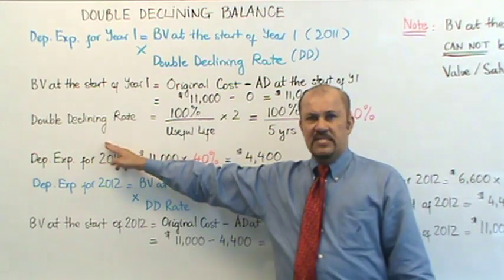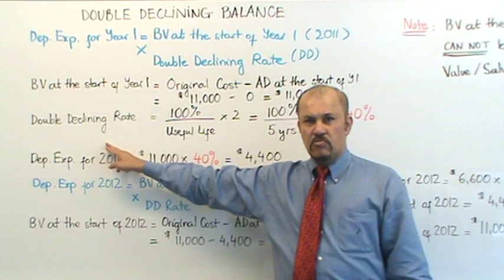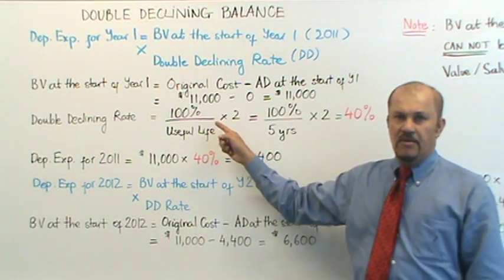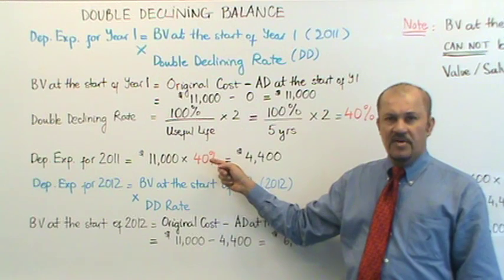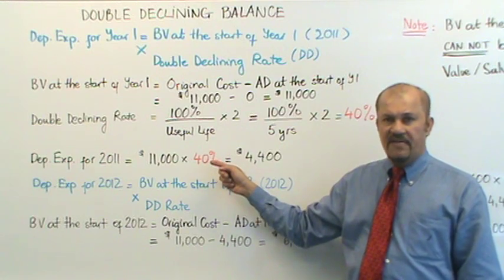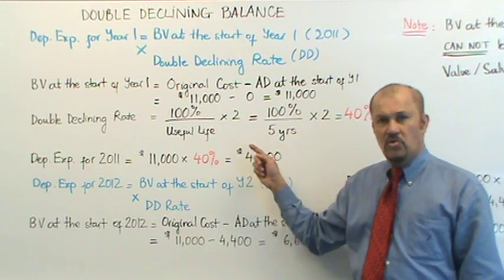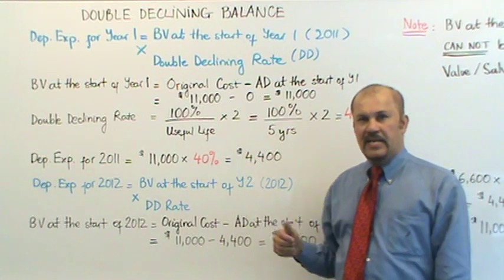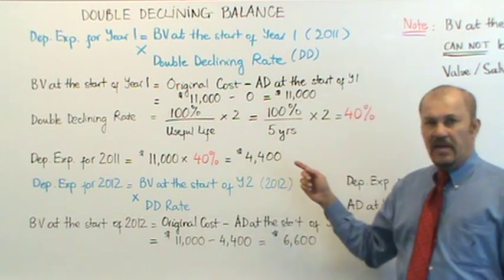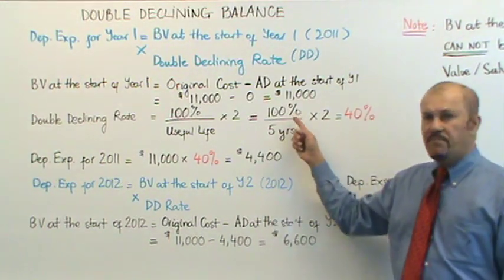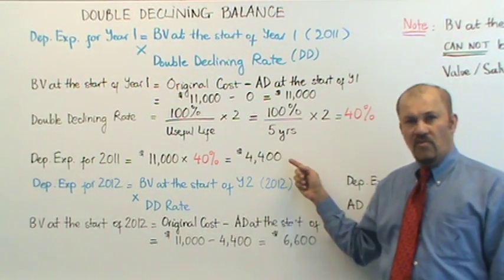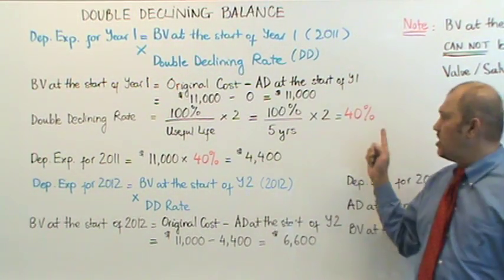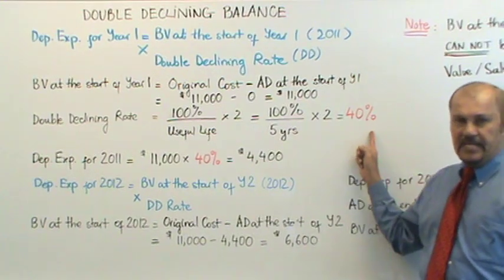The formula for the double declining rate would be 100% over your useful life in years, multiplied by 2 because it is the double declining method. In our example, that's 100% over 5 years multiplied by 2, which gives us 40%.